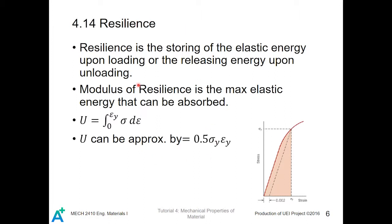Modulus of resilience is the max elastic energy that can be absorbed. U is equal to the integral of the stress value d-strain from the strain value at the yield stress to 0, which is shown in the graph here. It can be approximated by 0.5 times yield stress value times the strain at the yield stress value. This value is basically a triangle.